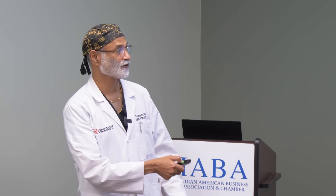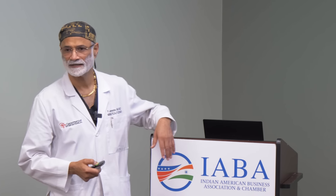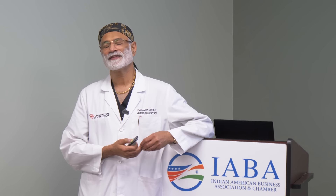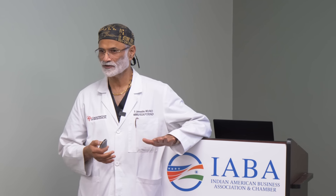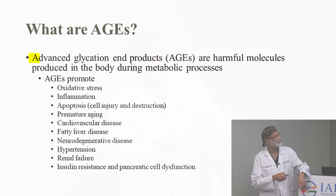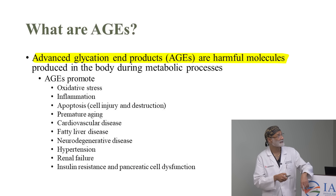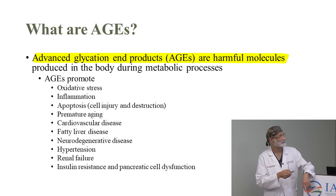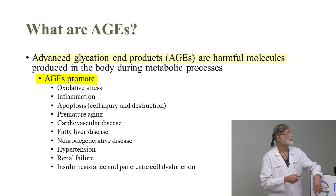What I'm trying to show is that we think aging is about other things, but aging is multifactorial. One of the major issues as to why you get sick and age prematurely is because you're rusting — and you're rusting because lipid peroxidation has been unrecognized. Advanced glycation end products are harmful molecules. Once you get them — in which fats play a huge role — you get oxidative stress, inflammation, and your plaques are going to rupture. They cause apoptosis, cell injury and destruction, premature aging, cardiovascular disease.